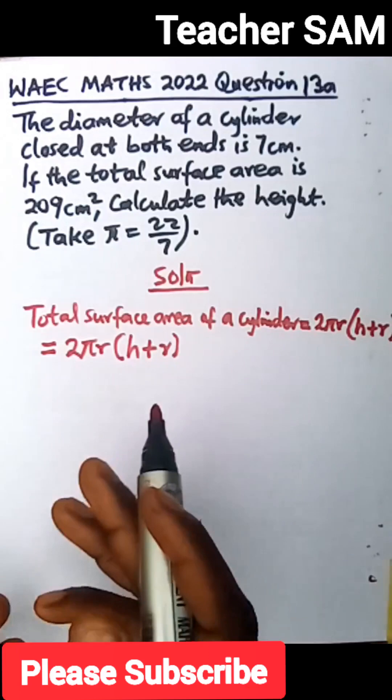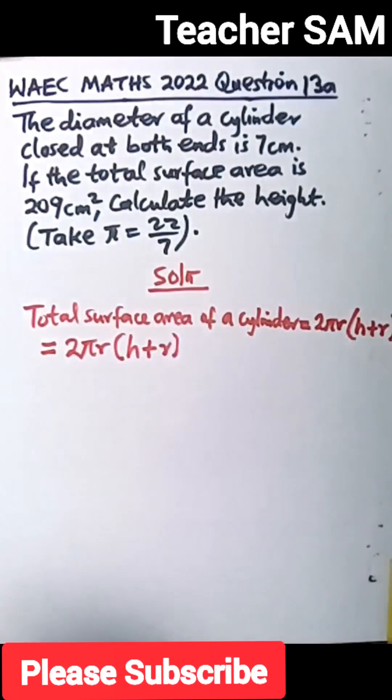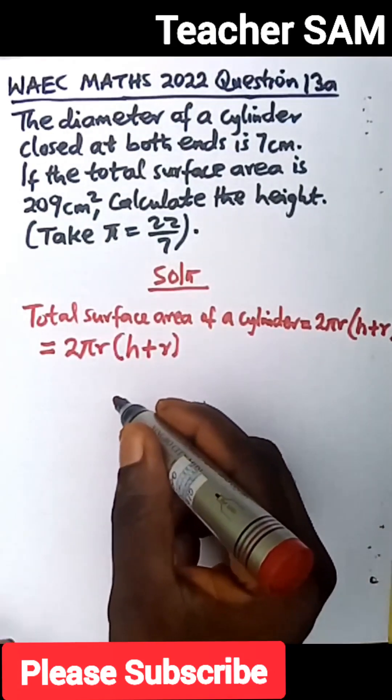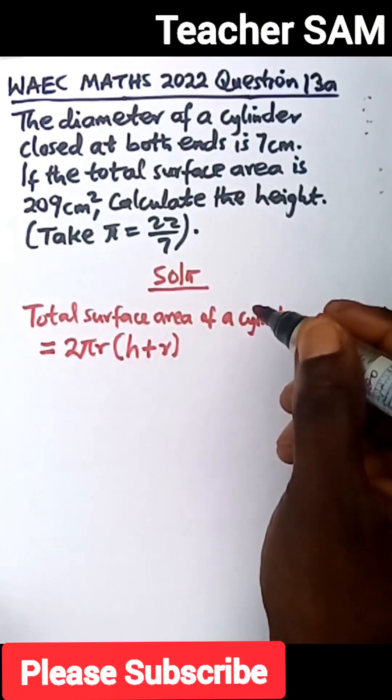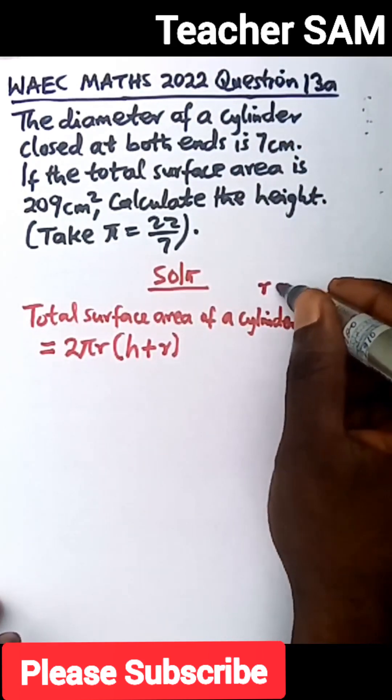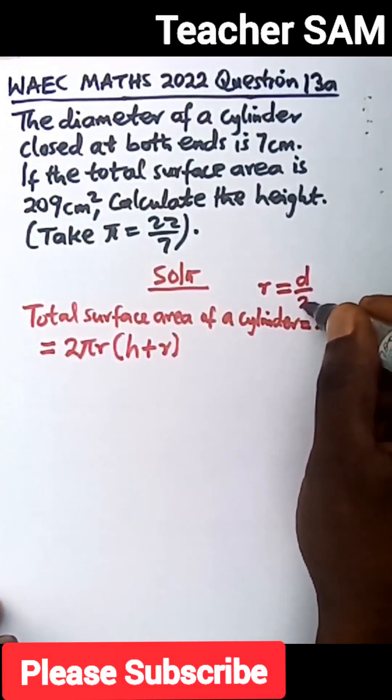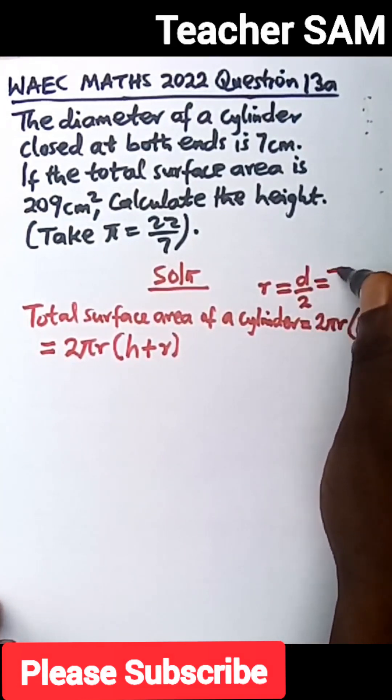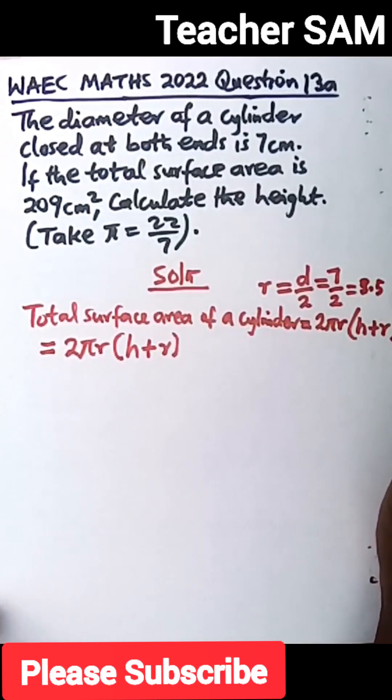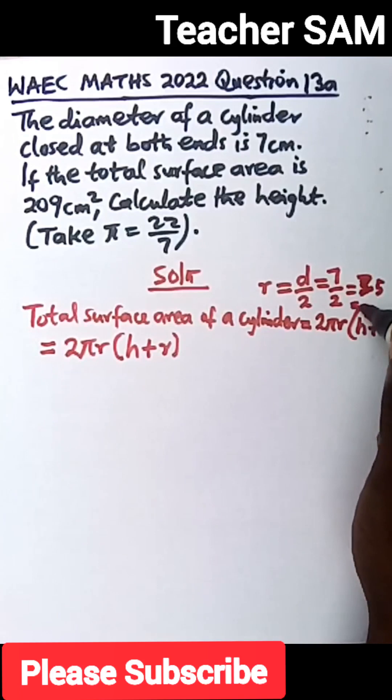Now, it is closed at both ends, so we derived this formula. From the question, we are given the diameter, not the radius. So our radius, we know that radius is diameter divided by 2. Our diameter is 7, so 7 divided by 2 gives us 3.5. So that is our radius.